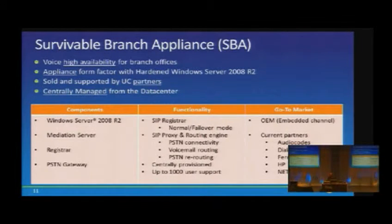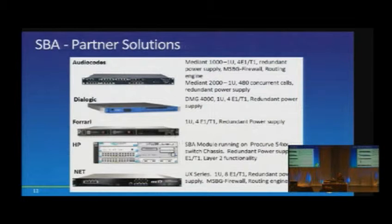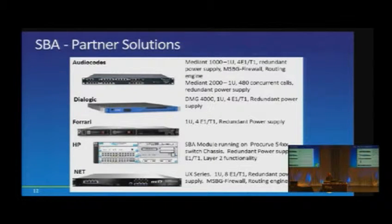There are currently about five SBA partners — AudioCodes, Dialogic, Ferrari, HP, and Net — providing survivable branch appliances. These are 1U or 2U rack-mounted boxes with ports for PSTN connectivity and network connectivity.